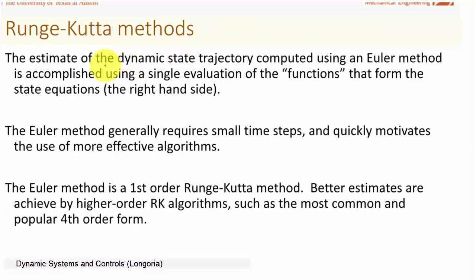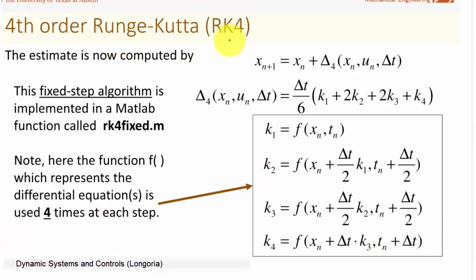So the general Runge-Kutta methods - the estimate of the dynamic state computed using the Euler method takes just a single evaluation of the functions on the right-hand side. The Euler method requires very small time steps because of this, and because it's a first-order method. So we're going to look at a fourth-order method because then you can take slightly larger steps and you get a more accurate integration of your state equations.